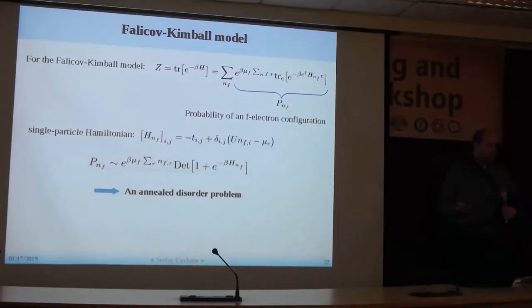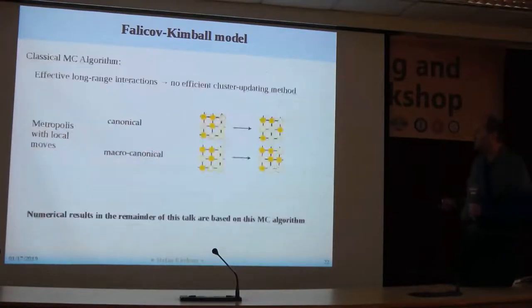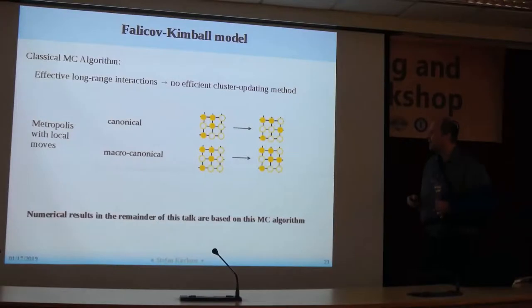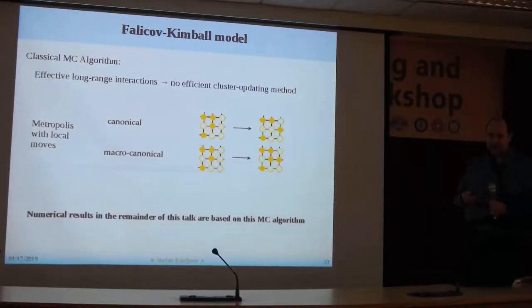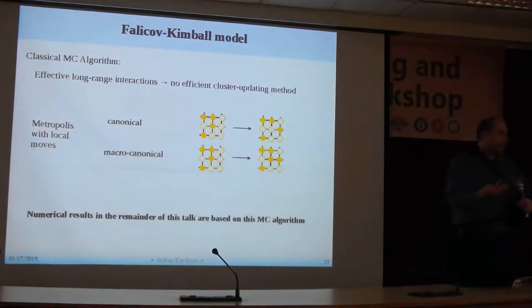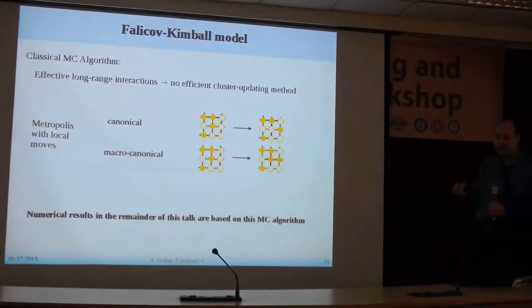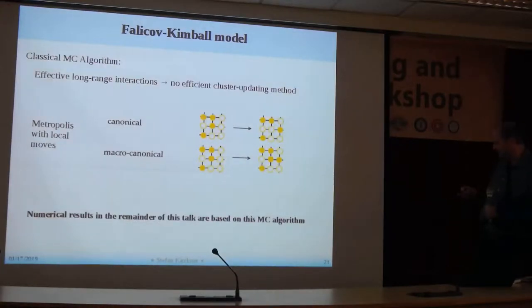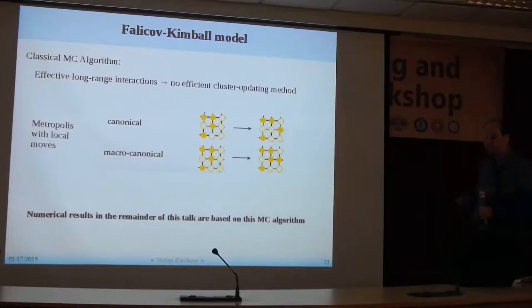If you take the Falikov-Kimbell model and rewrite the partition function, you can interpret the sum over all possible configurations of the charge as the probability for a given f-electron configuration. This form and its dependence on temperature tells you this is a problem of annealed disorder — not quenched disorder. The Monte Carlo algorithm uses a classical algorithm since we have these classical charges. We integrate out the conduction electrons, which leads to an effective long-range interaction. For this, there's no efficient cluster algorithm, so we use local updates, either canonical or grand-canonical.